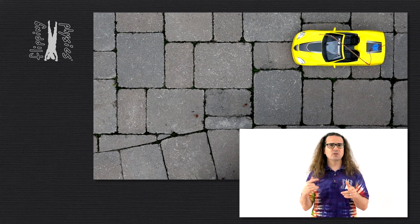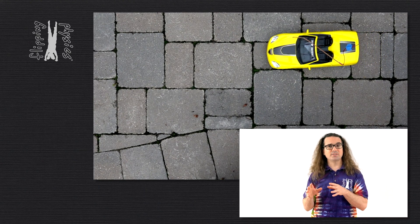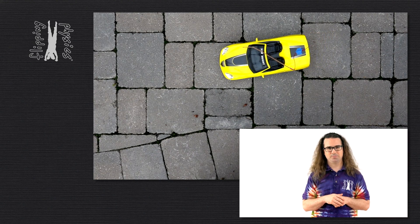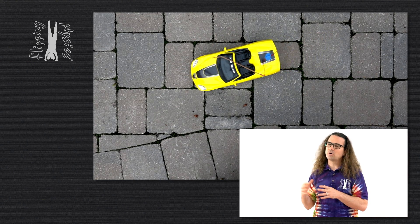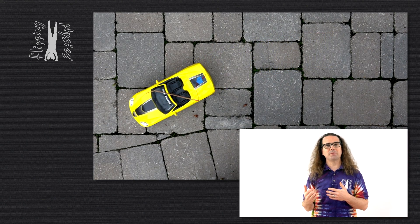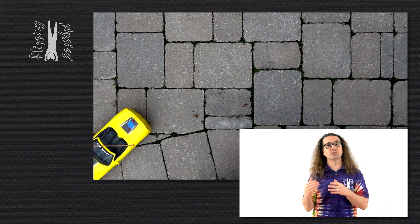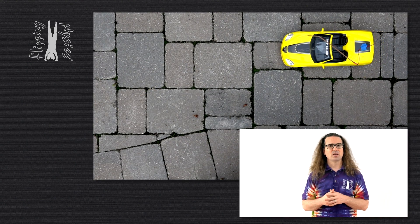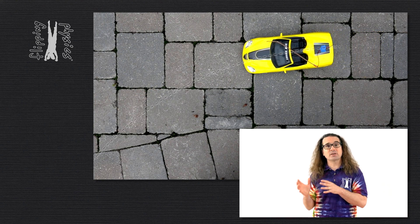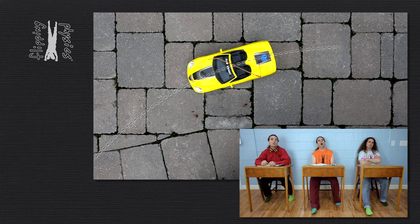Let's slow the video down so we can more easily discuss what is happening. Bo, tell me what you notice about the tangential velocity of the car which is speeding up and turning, and how that affects the linear accelerations of the car.